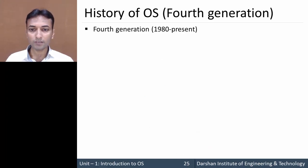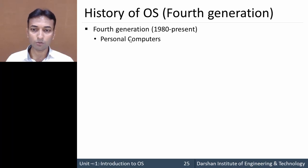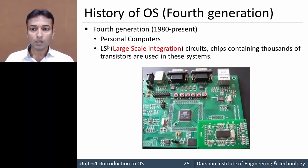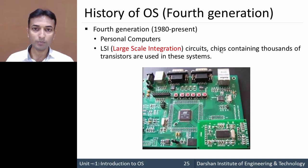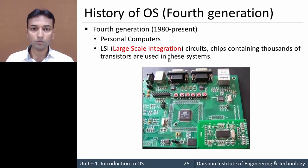Next, the fourth generation, from 1980 to the present. Computers developed in the fourth generation are personal computers, which we are using right now. In this generation, LSI — large scale integration circuits — were used to develop computers. LSI is a chip that contains thousands of transistors. That concludes the history of operating systems from first to fourth generation.